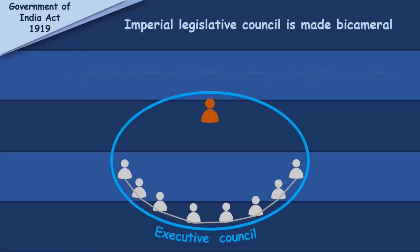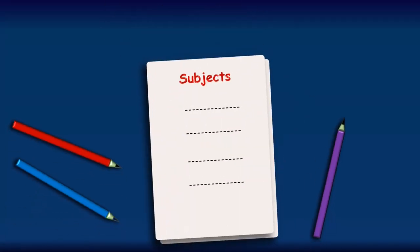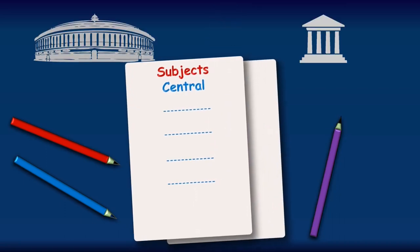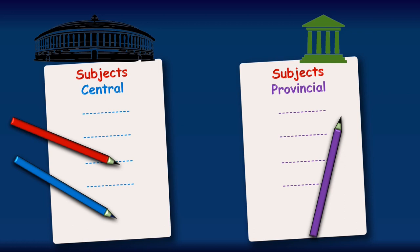Second, at the level of the Union Executive, there were to be at least three Indian members in the Viceroy's Executive Council. Another provision was that subjects of administration were divided into two lists — Central and Provincial — much like the 7th Schedule of the present day. This was done because after the Act of 1909, the Provincial Legislative Assembly was dominated by Indians while the Central Legislative Council was still dominated by the British, so subjects were divided to avoid conflicts.